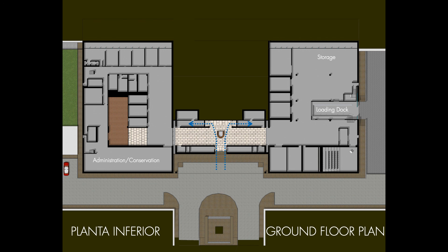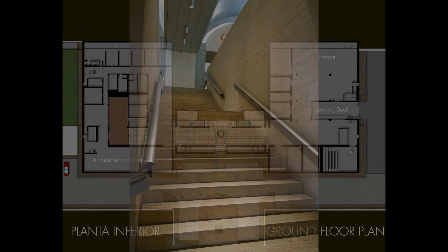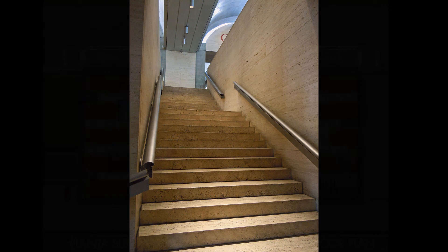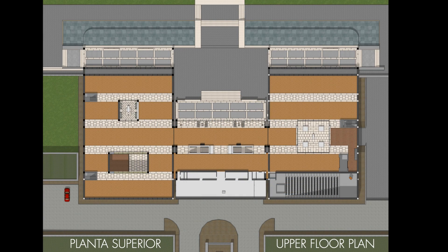This is how the main entrance happens. And this is one of the twin stairs that take one from the ground floor to the upper floor. On the top floor is the museum itself: galleries, restaurant, shop, auditorium, courtyard and library.